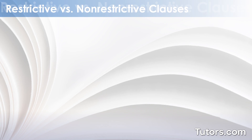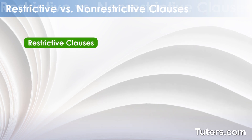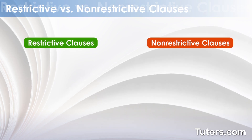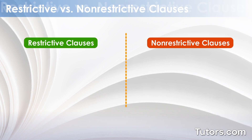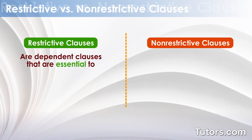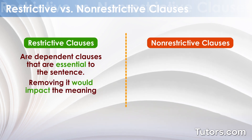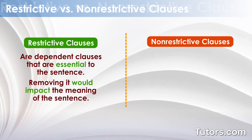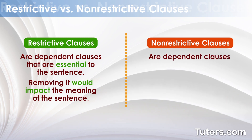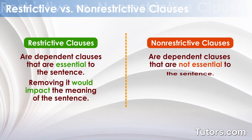Dependent clauses can either be restrictive or non-restrictive depending on their use in a sentence. Restrictive clauses are dependent clauses that are essential to the sentence; removing it would impact the meaning. Non-restrictive clauses are dependent clauses that are not essential to the sentence; removing it would not impact the meaning.